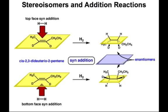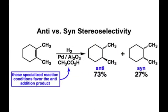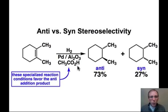Having seen what syn addition looks like, now let's find an example of anti addition. Normally, the addition of hydrogen to a double bond favors the syn product, but it's possible to find a set of conditions in which the anti product is favored over the syn.